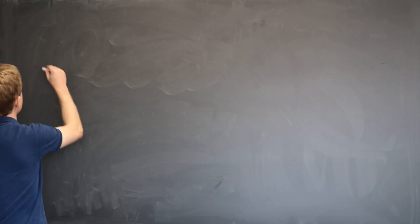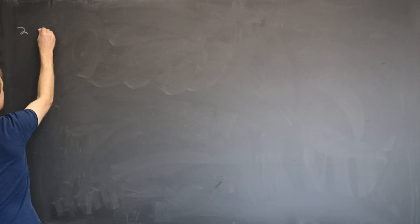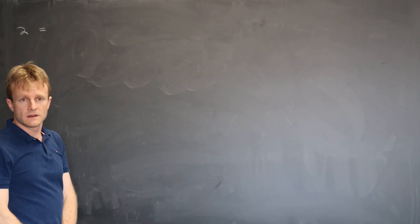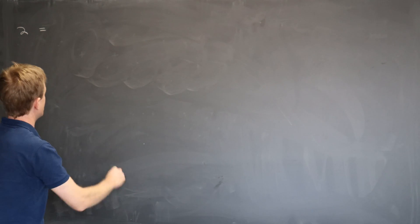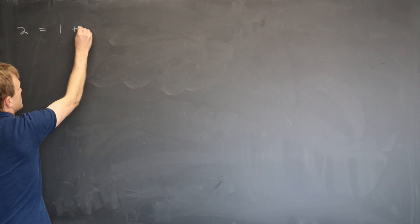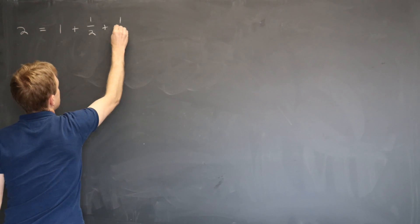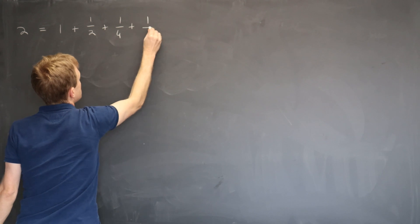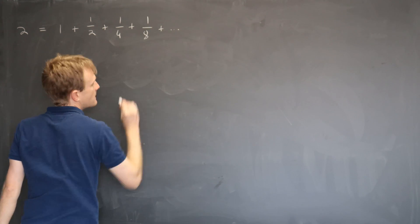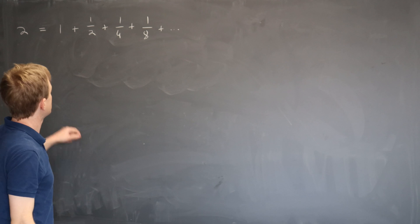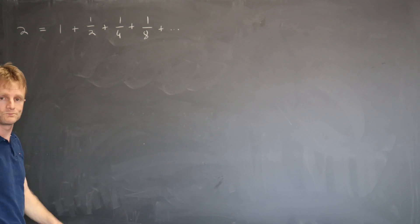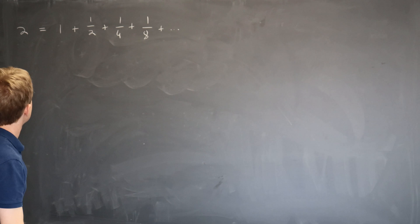We started out the course by making precise what we meant by adding up an infinite number of terms. A classic example is if you add up one plus a half plus a quarter plus an eighth, et cetera, you actually get two. That is an infinite series for just a number.